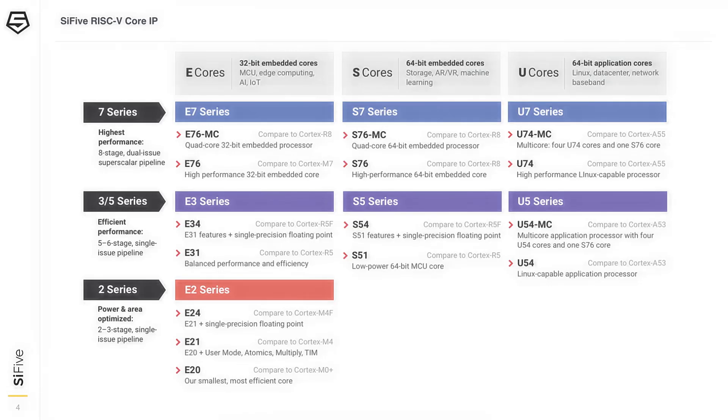We also break it down into different product series, which define the pipeline of the processor design. The 2 series is our most power- and area-optimized design for 32-bit microcontrollers. The 3 and 5 series are higher performance, introducing features like multi-core, level 2 cache controllers, caches, and TCMs. Last year we introduced the 7 series, a superscalar in-order processor — very high performance but also very efficient. The 7, 3, and 5 series span across the E, S, and U cores, so we have offerings in all three spaces.